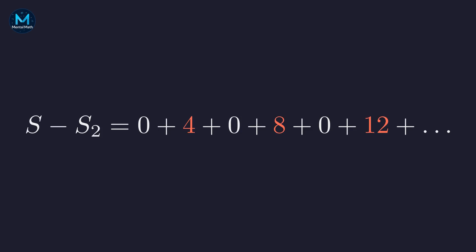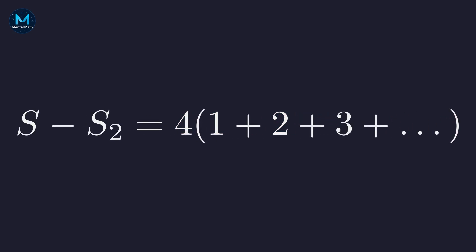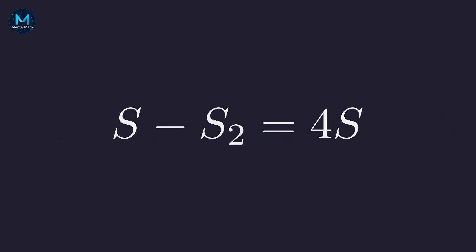Notice that every term on the right-hand side is a multiple of 4. This allows us to factor out a 4. Factoring out 4 leaves us with 4 times the quantity 1 plus 2 plus 3 and so on. The series in the parentheses is, once again, our original series S. The equation collapses to S minus S sub 2 equals 4S.